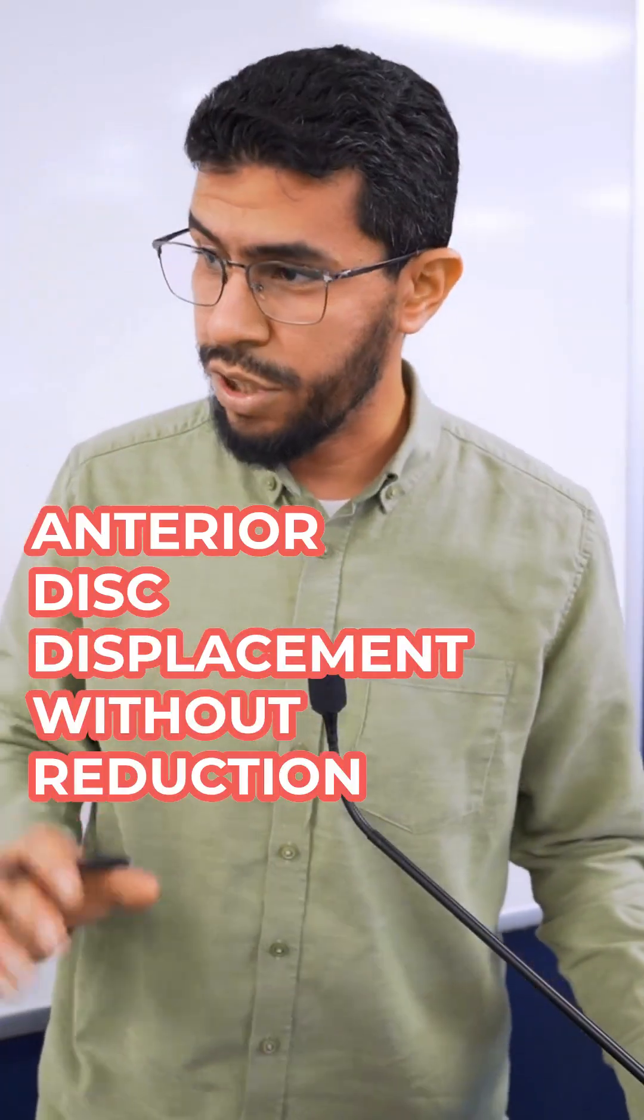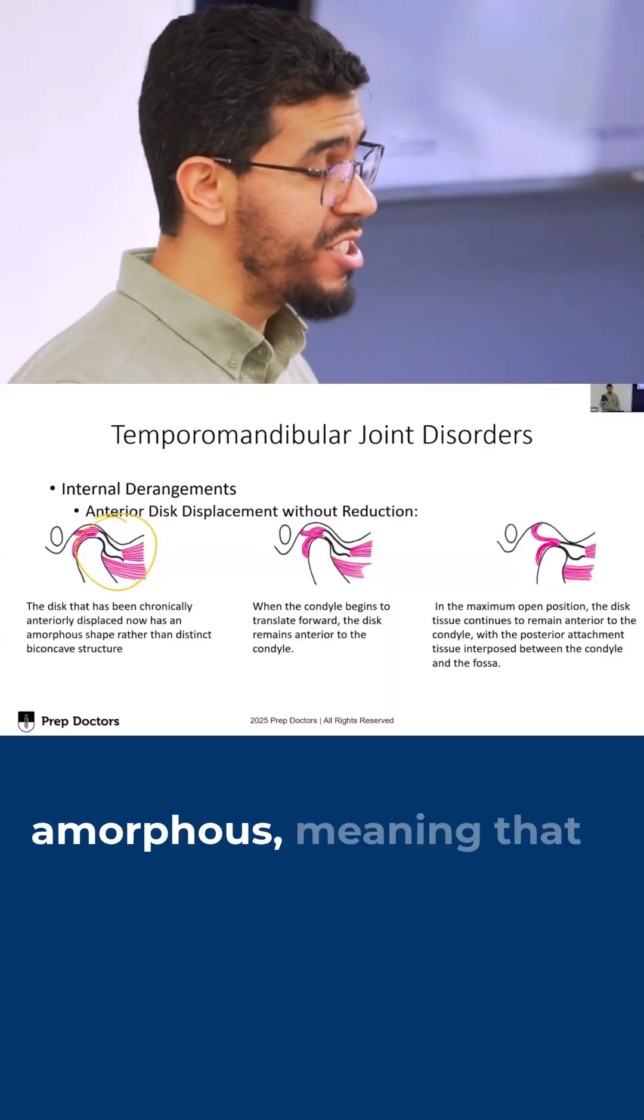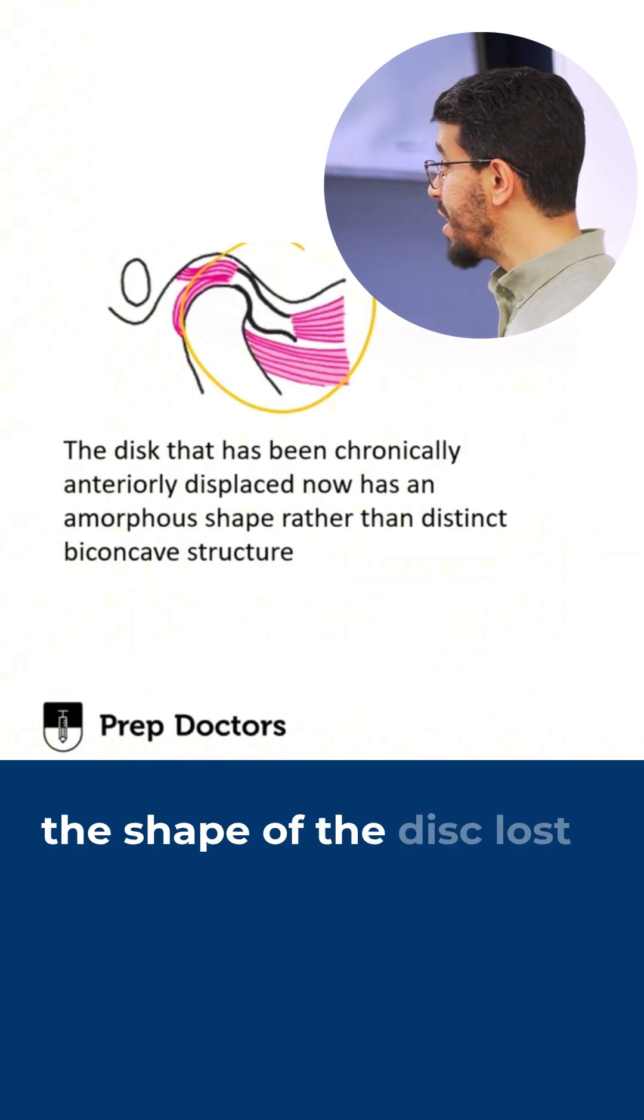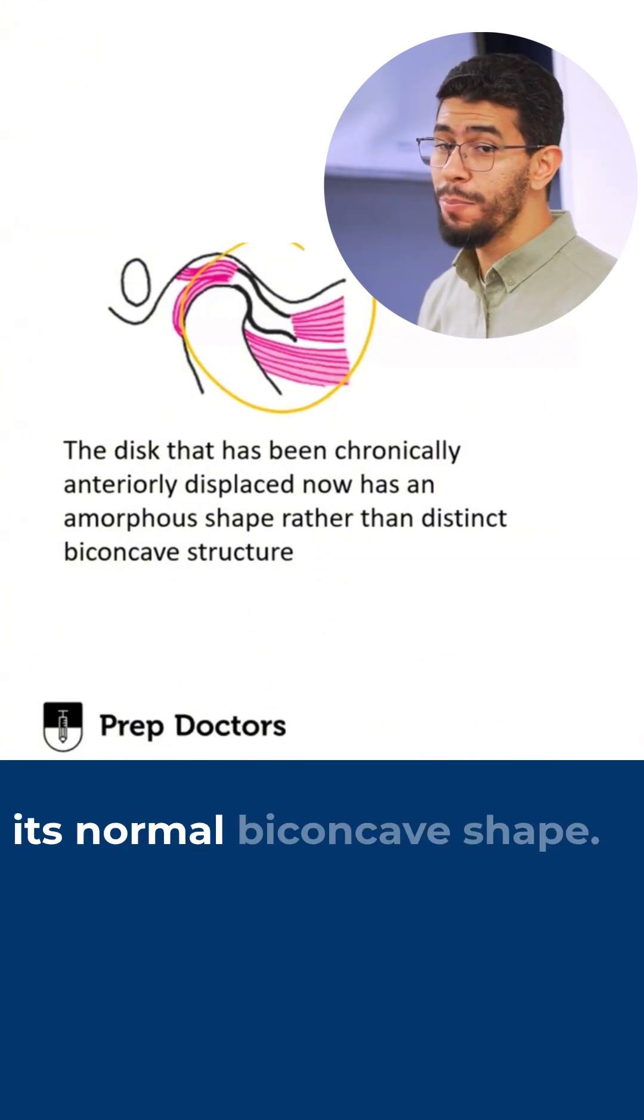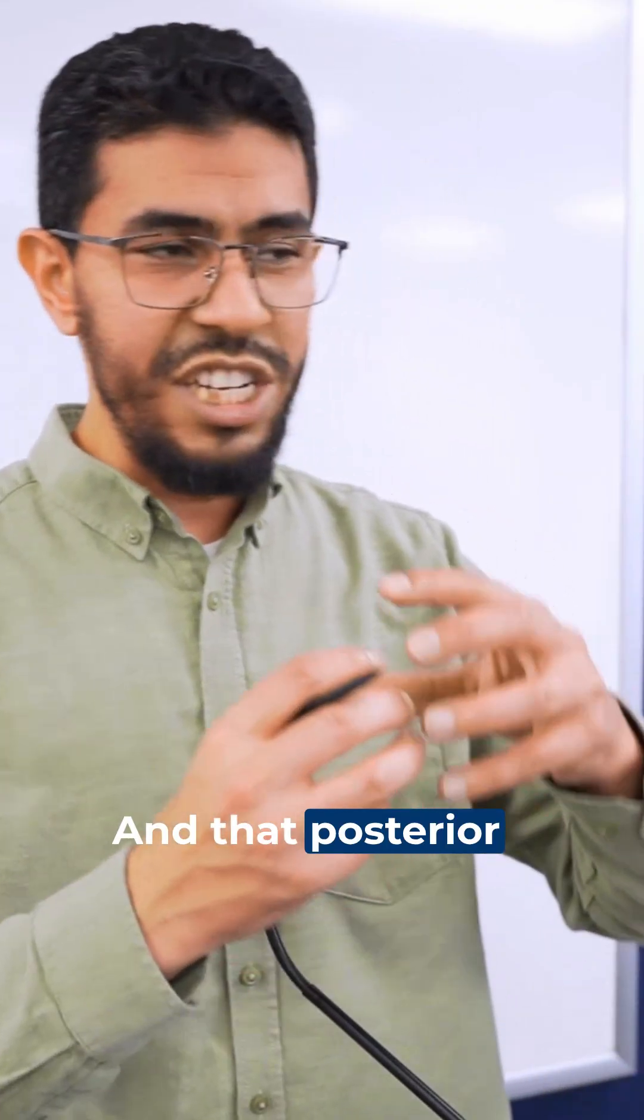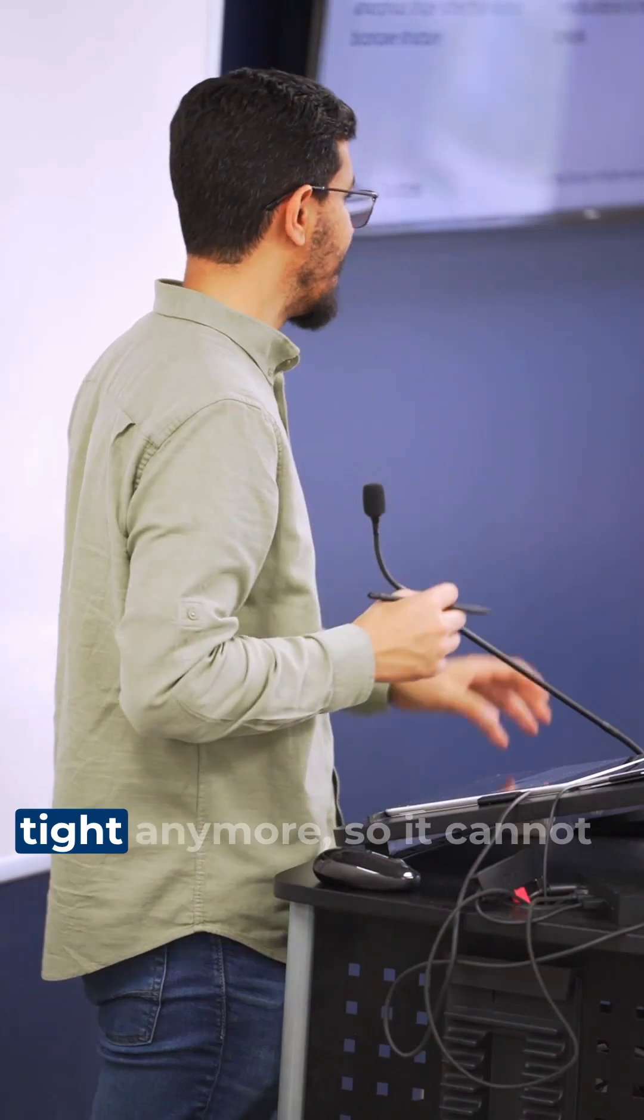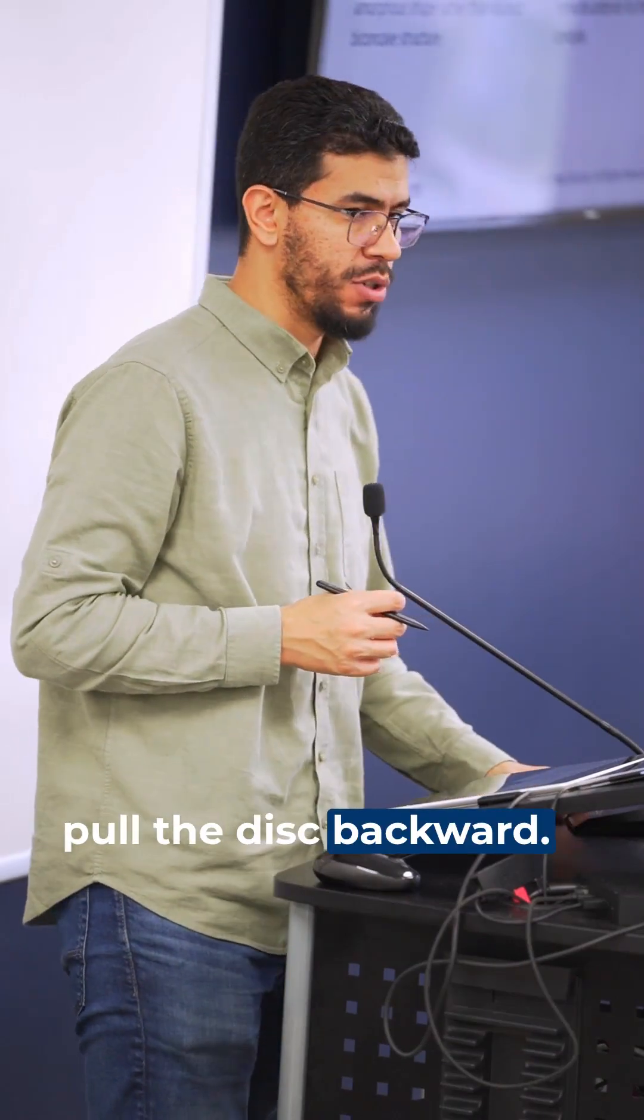Anterior disc displacement without reduction: the disc has become amorphous, meaning that the shape of the disc lost its normal biconcave shape, and that posterior discal tissue is not tight anymore so it cannot pull the disc backward.